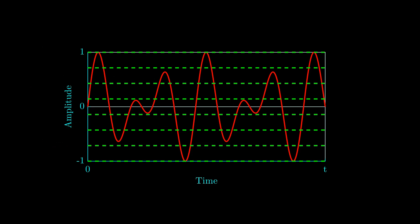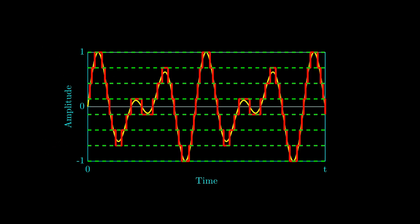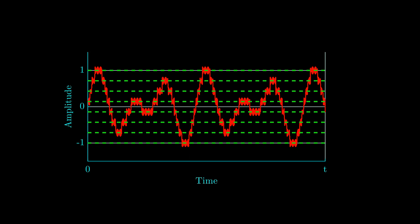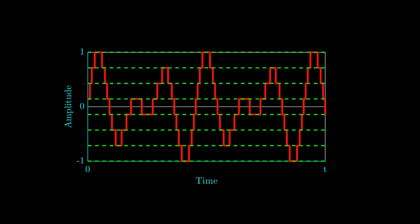Now let's digitize the same signal into eight discrete levels. The digitized signal will look like this. To corrupt this digital signal, the noise would need to reach a level comparable to at least half the size of the quantization step. In short, digital signals are more resilient because noise must exceed a higher threshold to corrupt the binary levels, whereas analog signals are affected continuously.